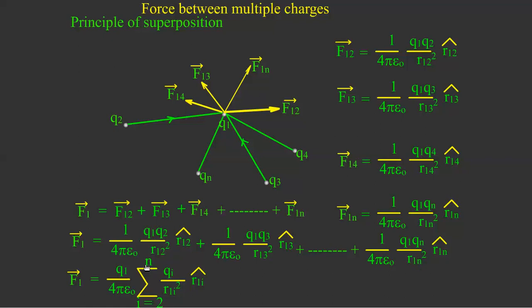That is N. So here, Qi divided by R1i squared R1i cap, where instead of 2, it is i. So this is the principle of superposition of forces.